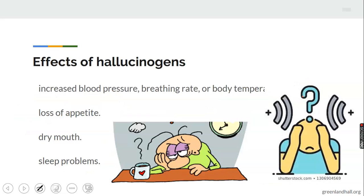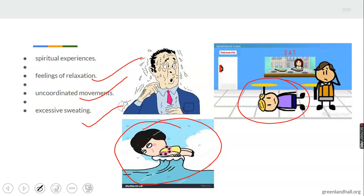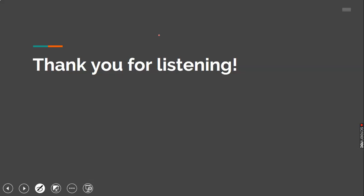Effects of this drug: increased blood pressure, breathing rates or body temperature, loss of appetite, dry mouth, sleep problems, you can't sleep because of this. There's also spiritual experiences, feeling of relaxation. Look at somebody relaxed on water, that's what he feels he is now. Your movement is distorted or uncoordinated movement, excessive sweating. It's very bad.